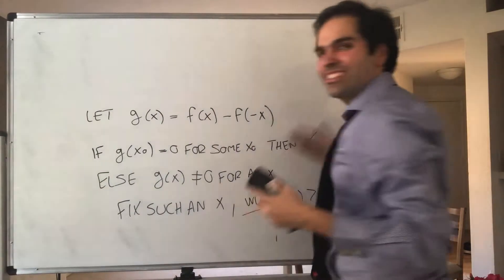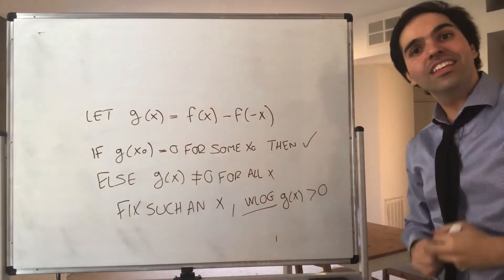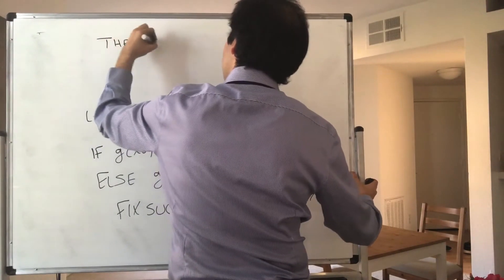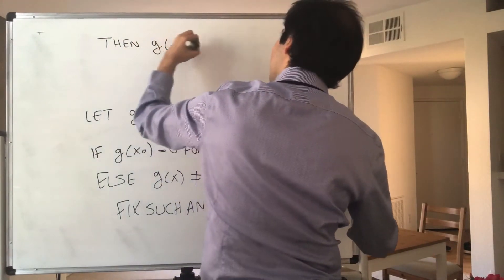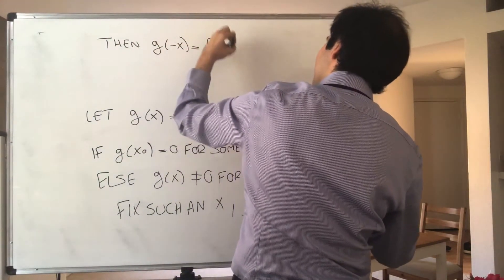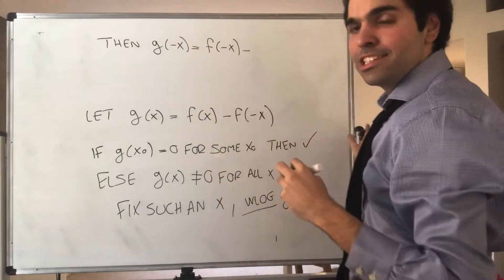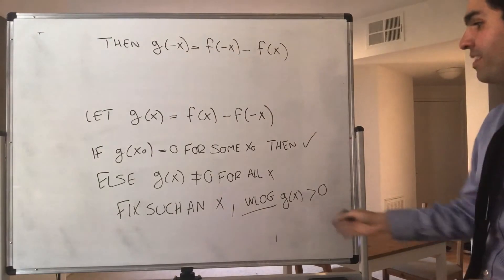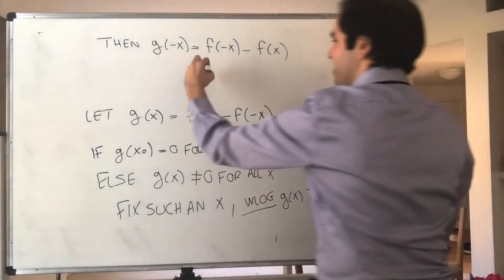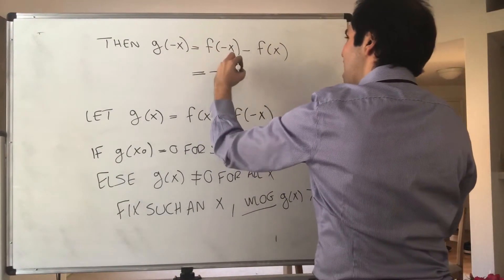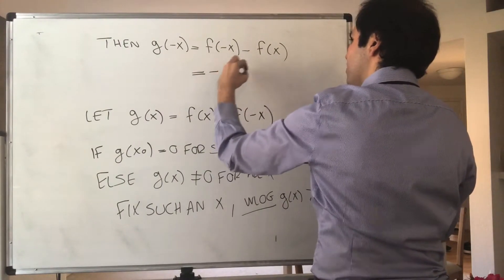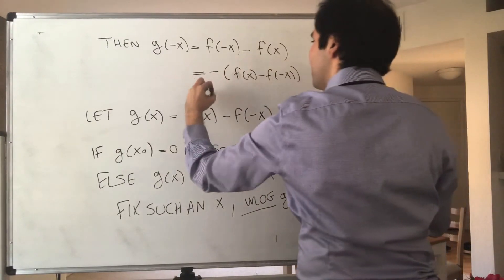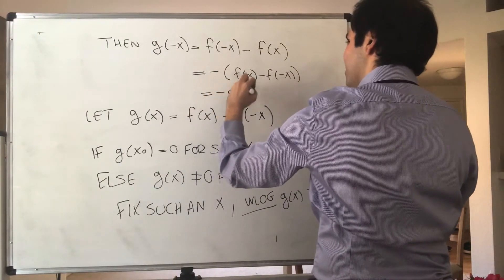But here comes an amazing trick. It never works except for this problem. Consider g(-x). Then g(-x), that is, f(-x) minus f(-(-x)), so f(x). But that's precisely minus g(x). Because that's minus f(x) minus f(-x). But that's minus g(x).